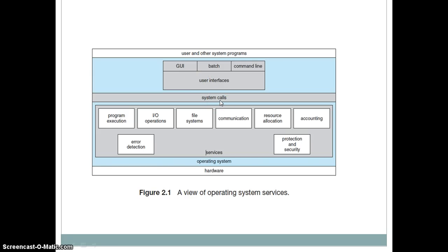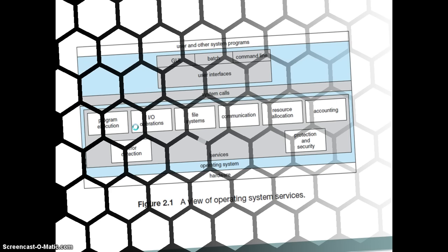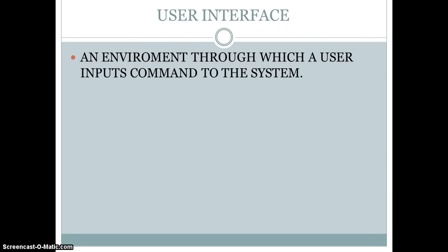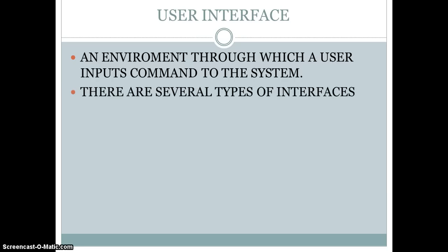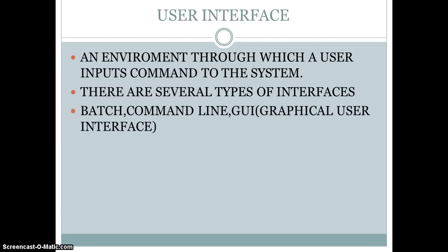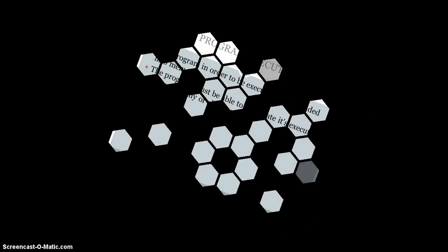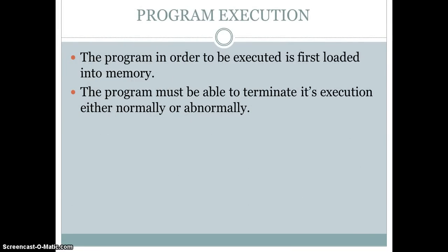System calls: whenever an application program needs to be executed, it requires some sort of services, and those services are provided by the operating system. We're going to talk about each one in upcoming slides. We already covered user interfaces — it is an environment through which a user inputs a command to the system — with types including batch, command line, and graphical user interface. Now we're going to talk about program execution.